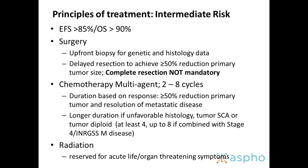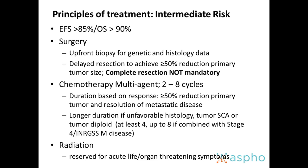For intermediate-risk neuroblastoma, this is a group that does extremely well — overall survival remains greater than 90%. Surgery is generally used for biopsy to obtain biologic information, and complete resection is not mandatory. When chemotherapy is used, anywhere from two to eight cycles are given depending on the presence of segmental chromosome aberration. The outcome remains excellent regardless of whether two or more cycles of chemotherapy are used, and therapy is response-adjusted, targeting at least a 50% regression in tumor size. Radiation is not used routinely but is reserved for acute life- or organ-threatening symptoms such as severe spinal cord compression not improving with initial chemotherapy.